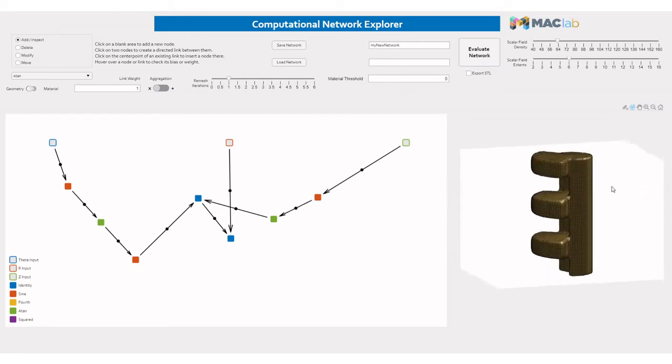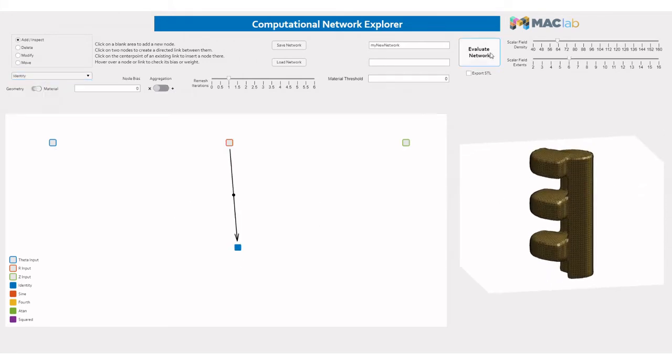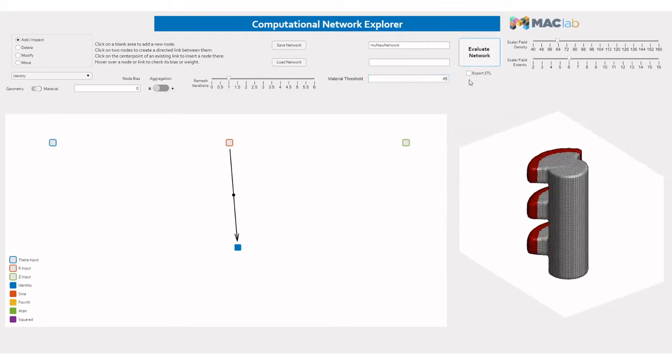Material distribution can also be modified using the same network structure, and the material threshold can be adjusted to shift the material assignment of certain faces.